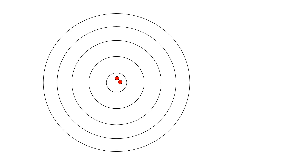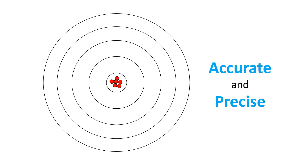I fire off a few rounds and find out this is how I go. I would say I am both accurate and precise. I'm accurate because my average shot — the center of all those shots — would be on the bullseye. And my shooting is precise because all of my shots landed really close together. So this is both accurate and precise shooting.